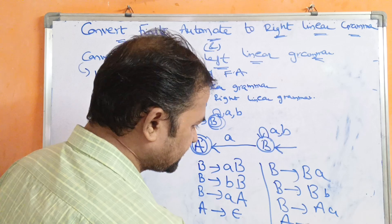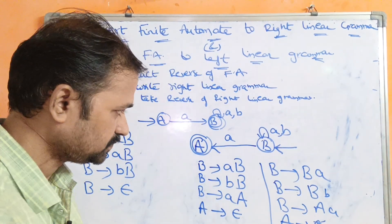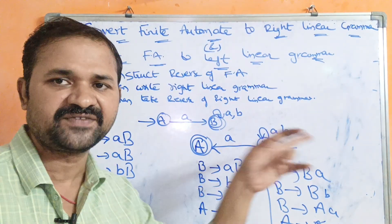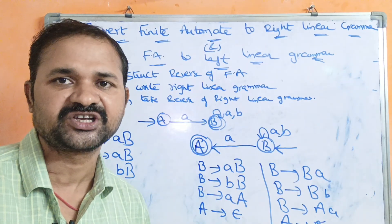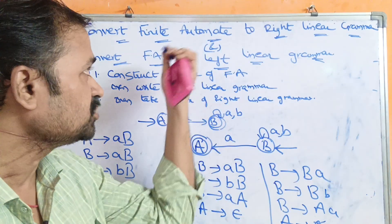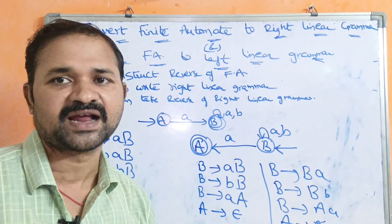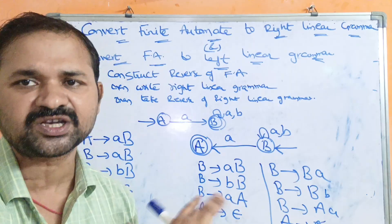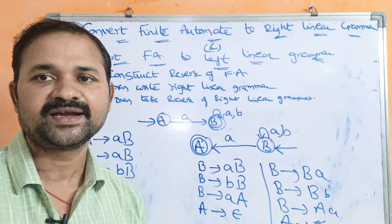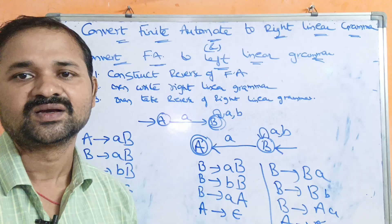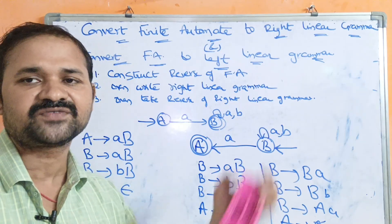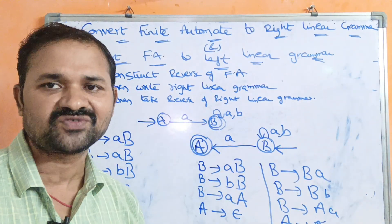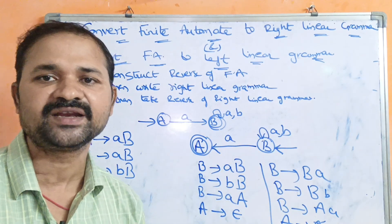The third step is to reverse the right linear grammar to obtain left linear grammar. Reversing gives: B → Ba, then B → Bb, then B → Aa, and A → ε is unchanged since ε is a terminal symbol. In left linear grammar, the leftmost symbol on the right-hand side is the non-terminal. For an exam question asking to convert finite automata to regular grammar, construct both right linear grammar and left linear grammar, since regular grammar includes both types.